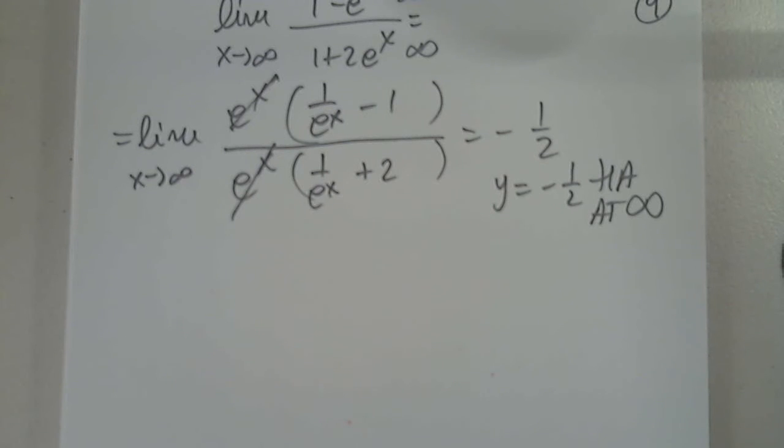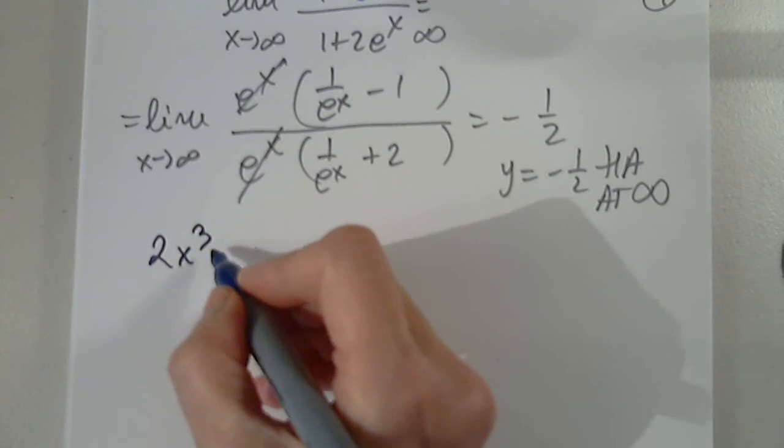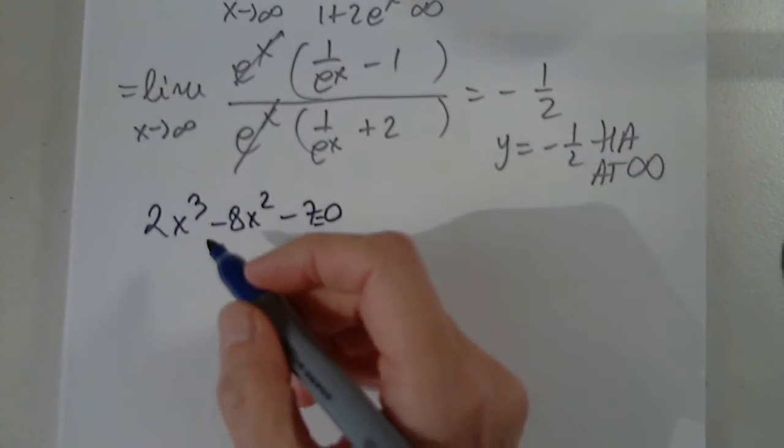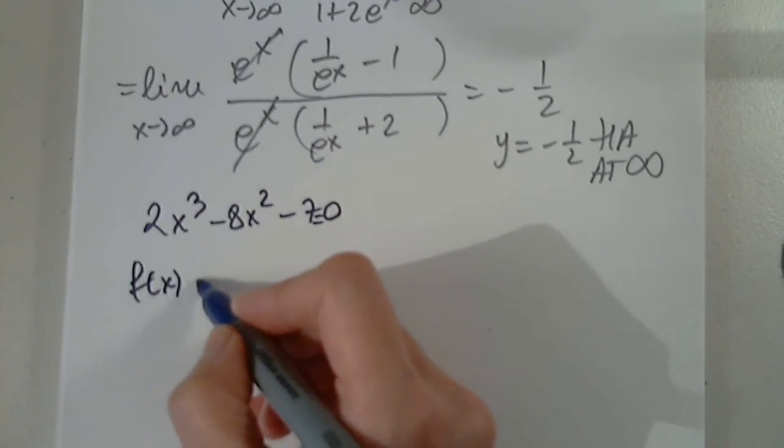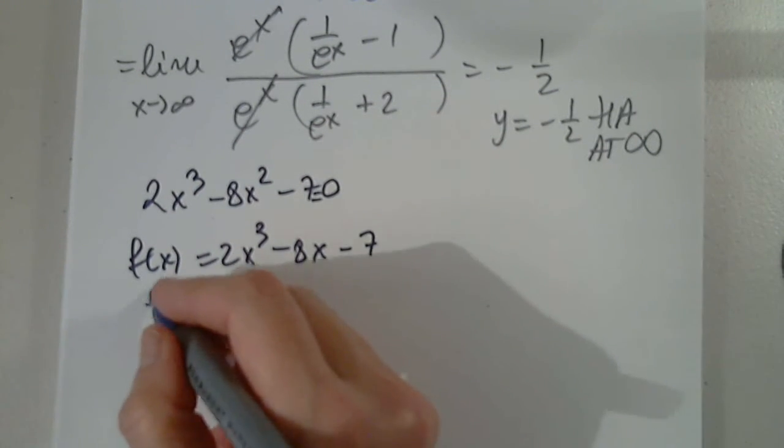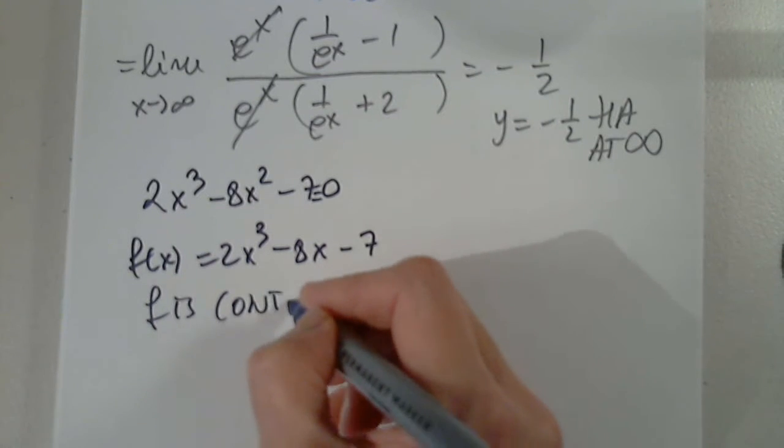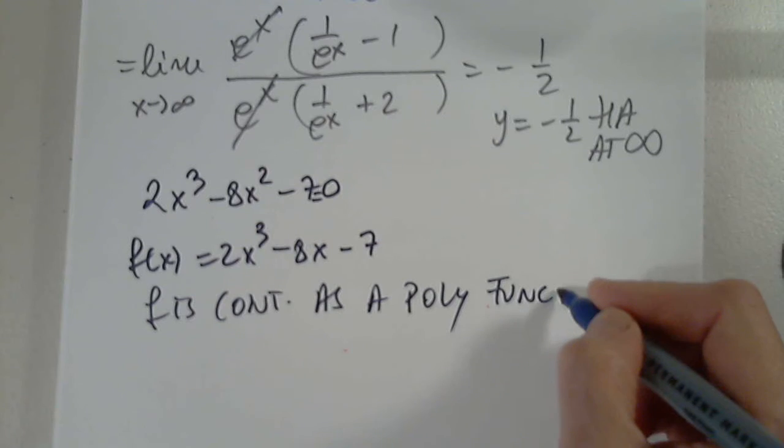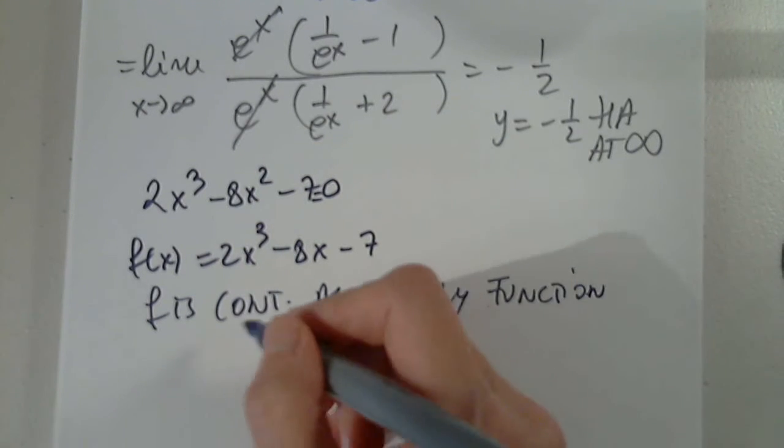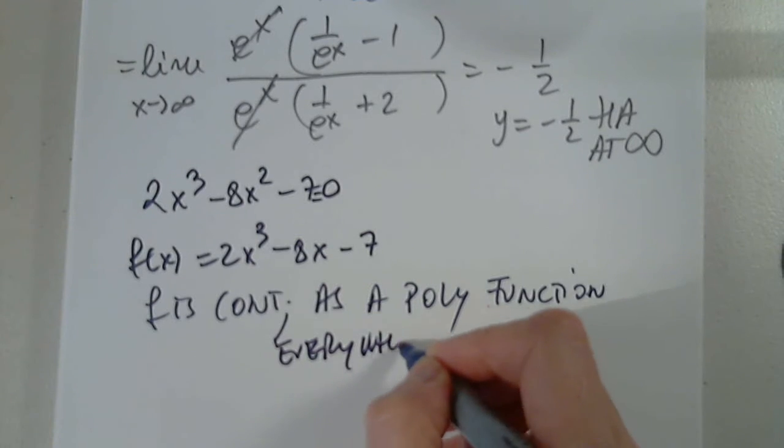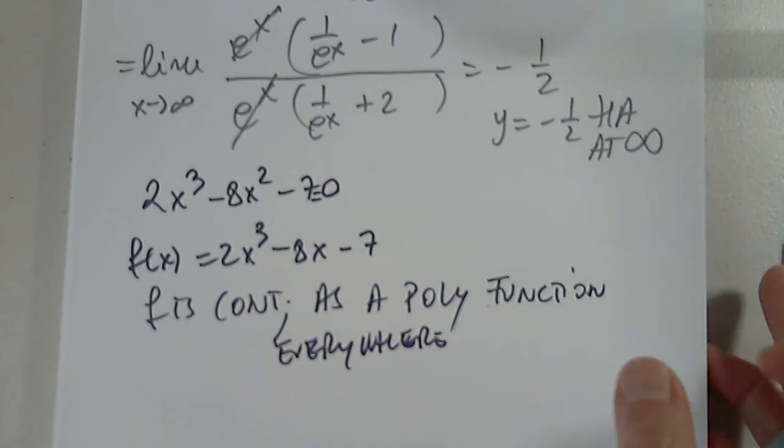Using the intermediate value theorem to show whether, we did a problem with number 6 today, but let's do another. So this is our function. And I have to write that F is continuous as a polynomial function everywhere.